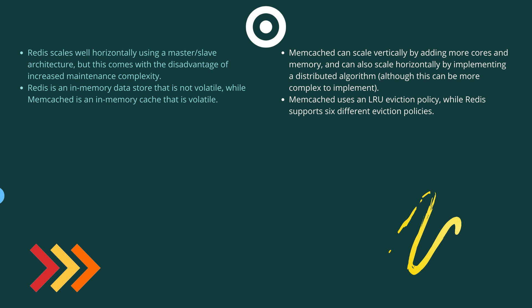Redis is an in-memory data store that is not volatile, while Memcache is an in-memory cache that is volatile. Memcache uses an LRU eviction policy, while Redis supports six different eviction policies.